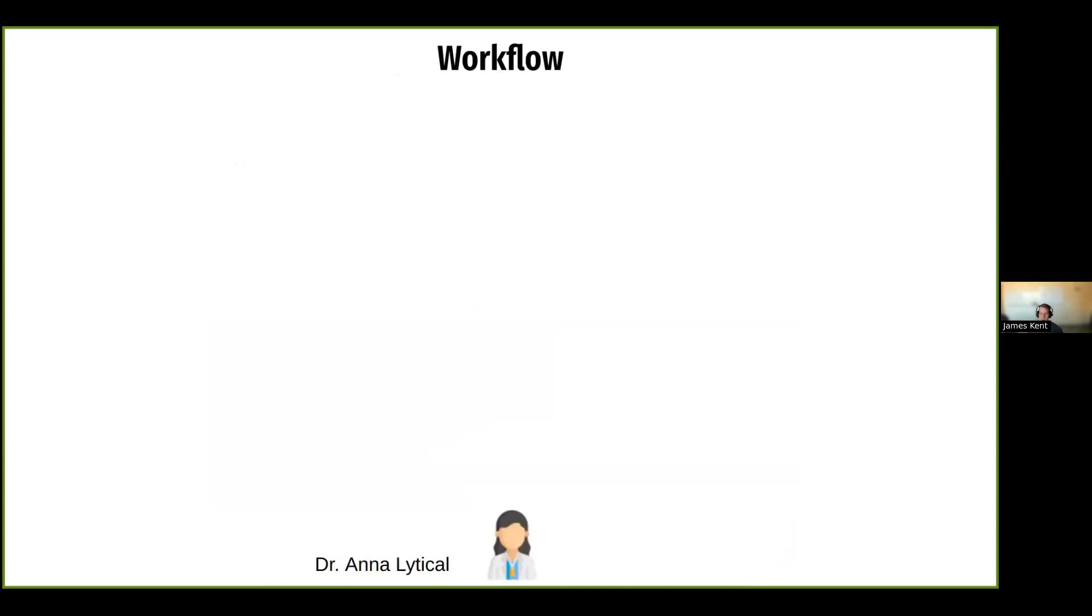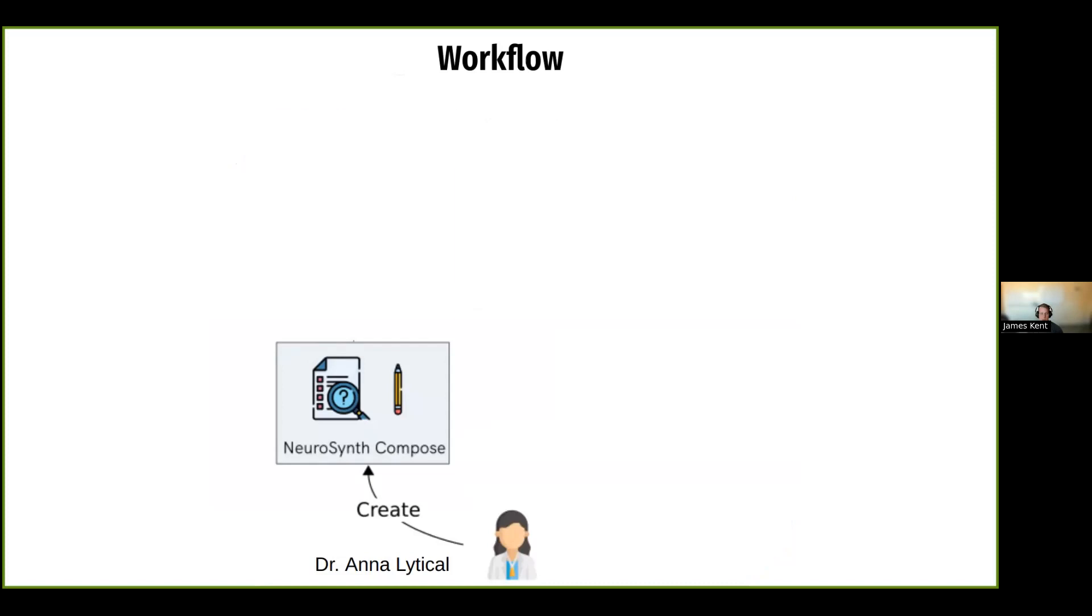So in this workflow and tutorial, we are going to be following Dr. Analytical as she creates a meta-analysis about nicotinic acetylcholine agonists. So if Dr. Analytical is thinking about creating a meta-analysis on Neurosynth Compose, she would go to the platform and select to create a new project. And as she searches for studies, it will be querying a separate service called NeuroStore, where we actually keep all of the studies and references to images from NeuroVault. And we can pull from PubMed, from NeuroQuery, and of course, from the Neurosynth database itself. So from there, she queries that database and includes those studies as a part of her study set within her project.